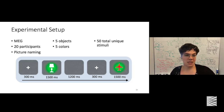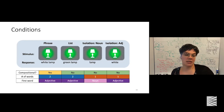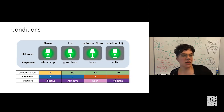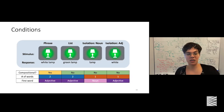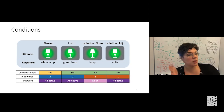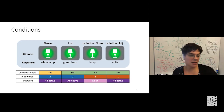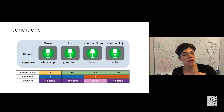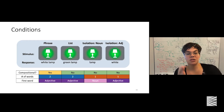In the phrase condition, the person says the color of the object and then the identity — so 'white lamp.' In the list condition, they say the background color followed by the identity of the object, so 'green lamp' — this is an interesting condition because saying the background color instead of the object color requires additional cognitive effort. In the isolation noun condition, they say just the object identity: 'lamp.' In the isolation adjective condition, they say just the color of the object: 'white.'